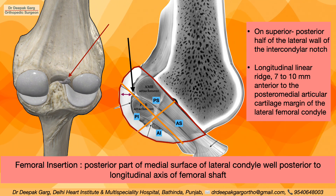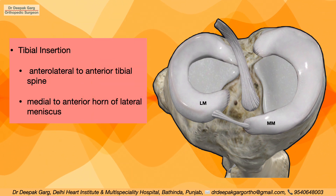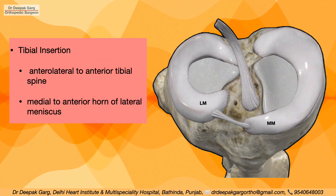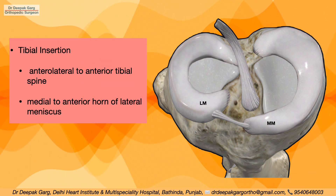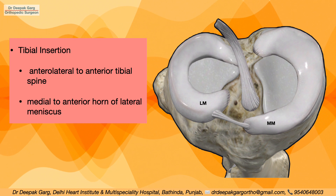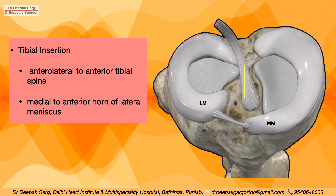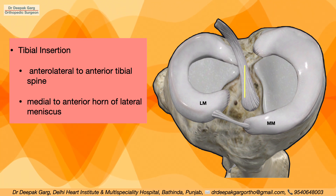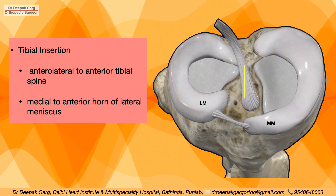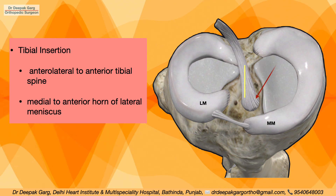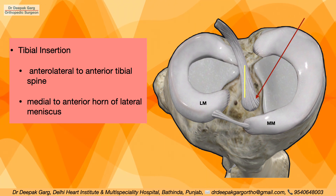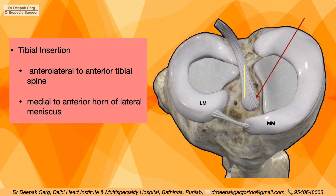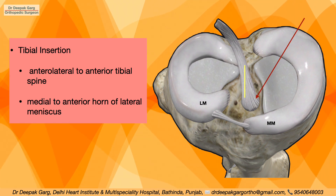Let's look at the tibial insertion of the anterior cruciate ligament. It is anterolateral to the anterior tibial spine and medial to the anterior horn of the lateral meniscus.